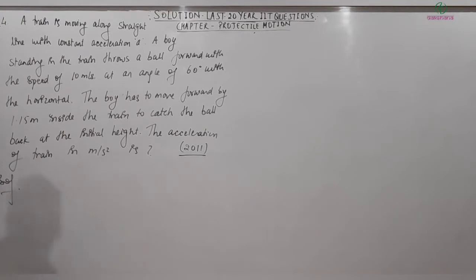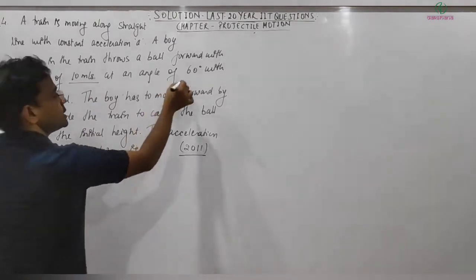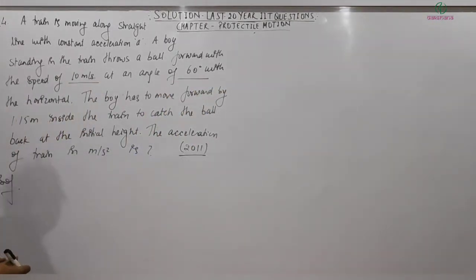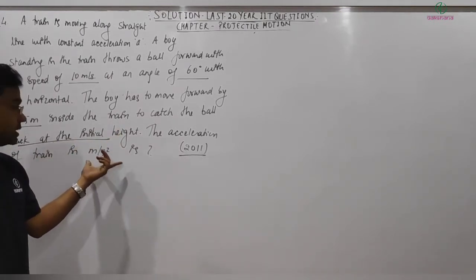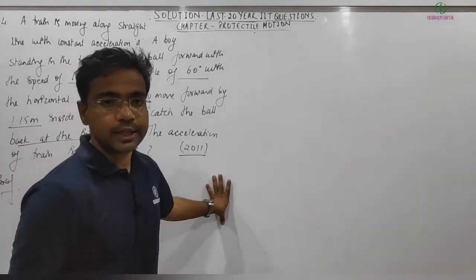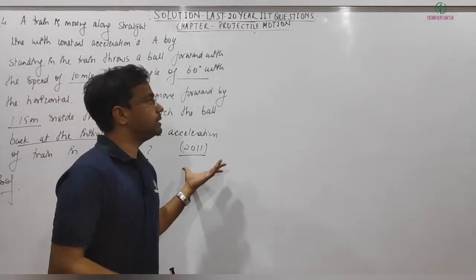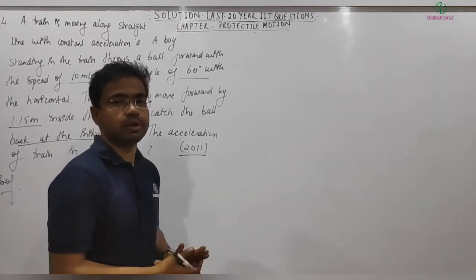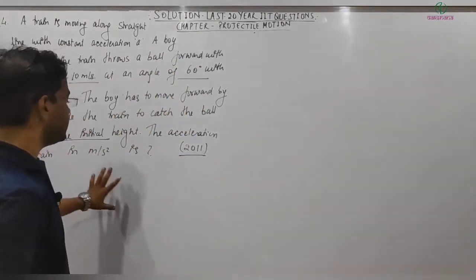Next problem, asked in IIT 2011: A train is moving along a straight line with constant acceleration a. A boy standing in the train throws a ball forward with a speed of 10 m/s at an angle of 60° with the horizontal. The boy has to move forward 1.15 meters inside the train to catch the ball back at the initial height. Find the acceleration of the train in m/s².